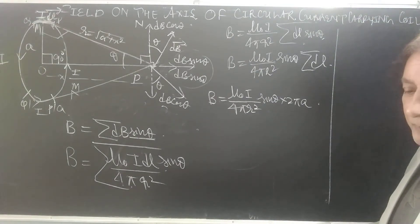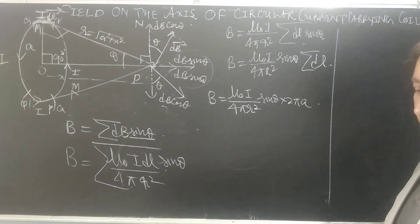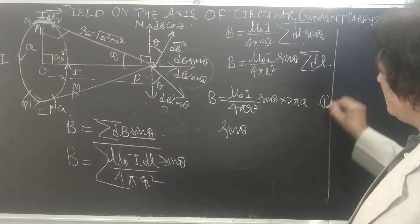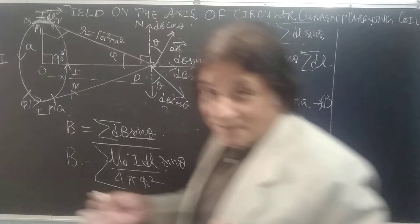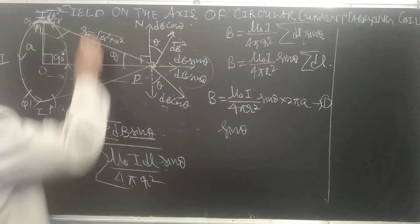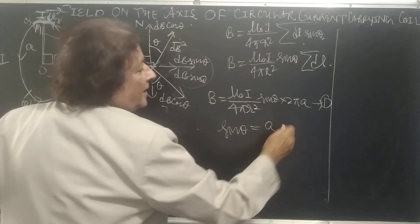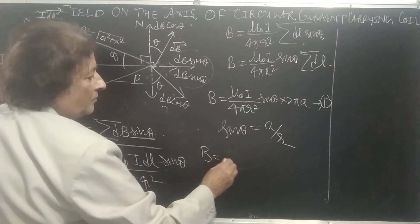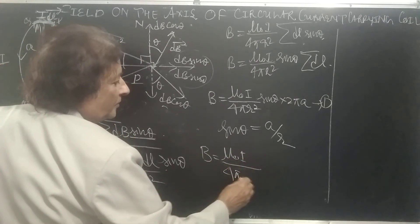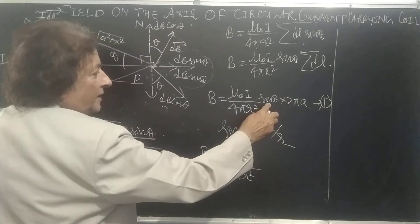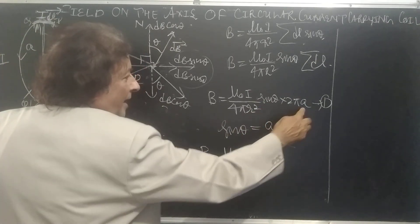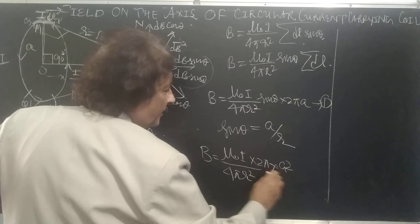So B = μ₀·I / (4π·r²) · sinθ · 2π·a. Now sinθ's value: perpendicular upon hypotenuse = a/r. So B = μ₀·I · (a/r) · 2π·a / (4π·r²) = μ₀·I · 2π·a² / (4π·r³).